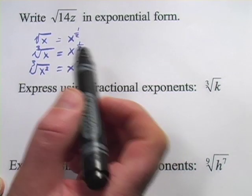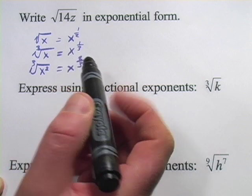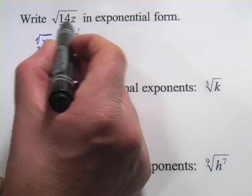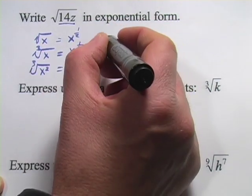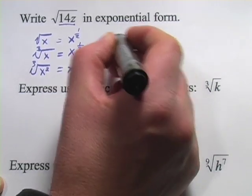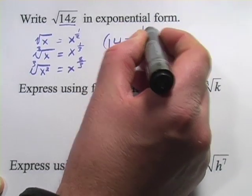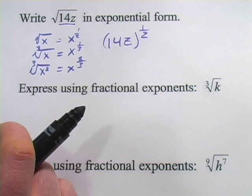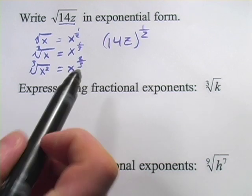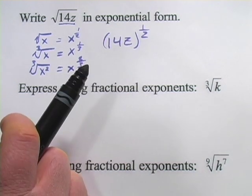So in this first one, it says write the square root of 14z in exponential form. So that's going to be this to the 1 half power. So 14z, and we'll put parentheses around here so they know we're raising the whole thing to the 1 half power. That is the square root of 14z.